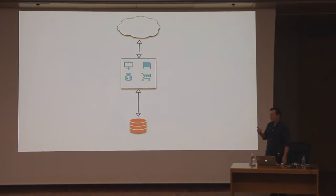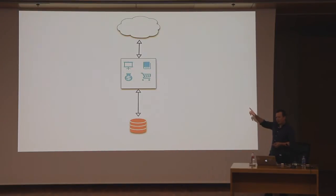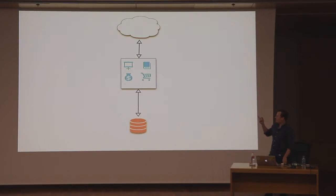I have this slide up here which represents the diagram I used throughout the presentation. This is supposed to represent an example of an e-commerce application. The cloud is the internet. The orange little database is the database, and the black box represents one application node or service. Each of the blue squares represents a different feature of that service — product browsing, product administration, order placement, and the shopping cart.